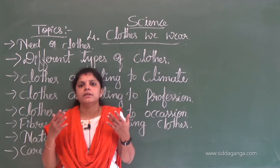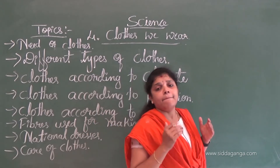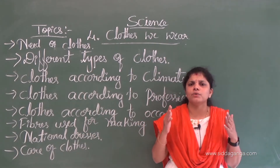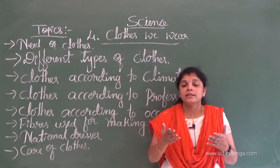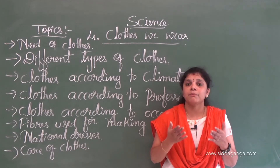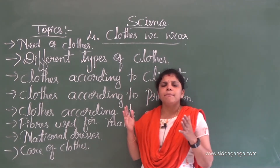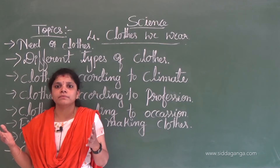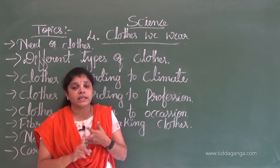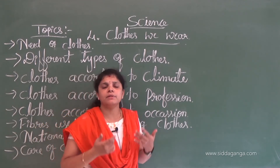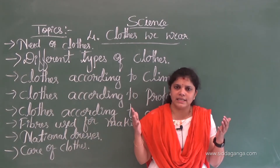Our world is very beautiful because it consists of thousands and thousands of things on the earth, and earth is the only place where life exists. Earth consists of many things: for example, buildings, chairs, tables, rivers, mountains, animals, birds, cars, and vehicles.